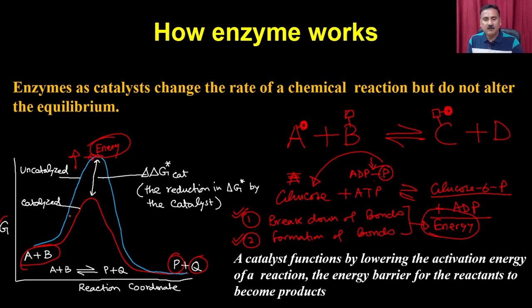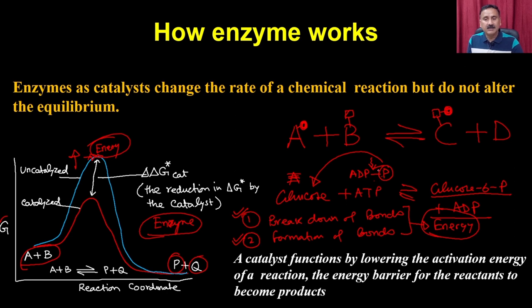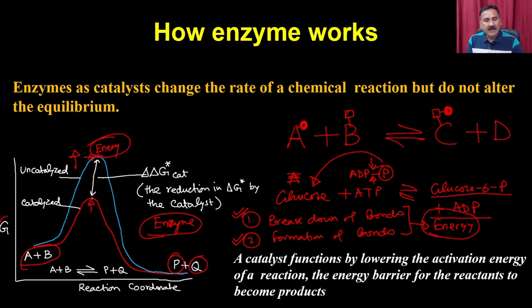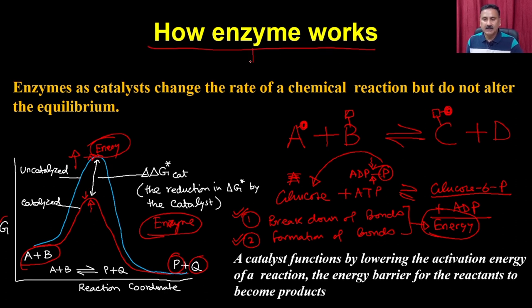If I do not add the catalyst, I have to heat the sample to such a high temperature that they will cross this particular barrier. Now if I add the enzyme, what the enzyme is going to do is it is actually going to bind the substrate. The amino acid side chains will facilitate the process of bond breaking as well as the formation of new bonds. Because of that, you do not need to heat the sample to such a high temperature - the same reaction can be done even at normal temperature.